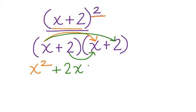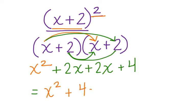We have 2 times x, which is plus 2x. And we have 2 times 2, which is plus 4. So our final answer is x squared plus 4x plus 4.